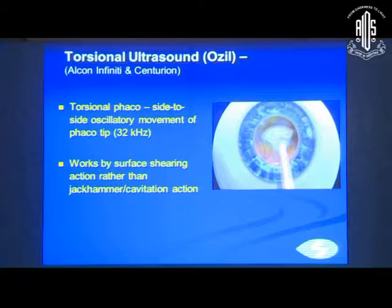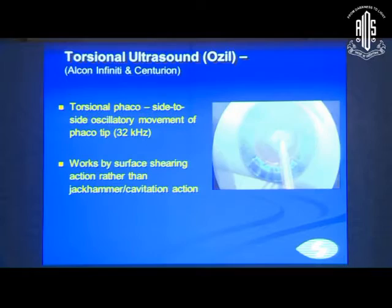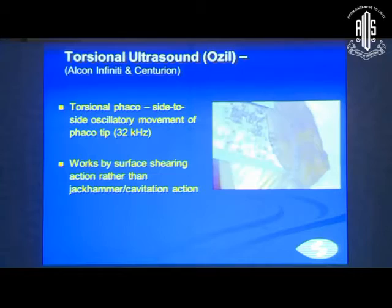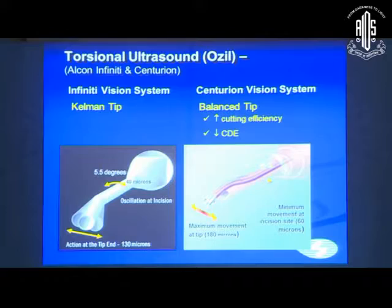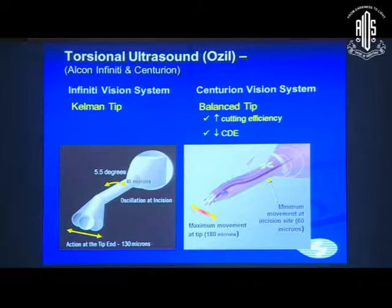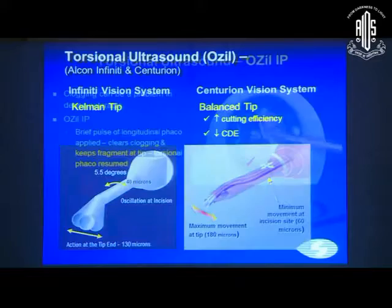Torsional phacoemulsification is a side-to-side oscillatory movement of the phaco tip, present in the Infinity and Centurion machines. It works by surface shearing action rather than a jackhammer effect. The Centurion Vision System now has the balance tip, which increases cutting efficiency and decreases the CDE delivered inside the eye, due to its design achieving maximum movement of 180 microns at the tip compared to the earlier Kelman tip's 130 microns.